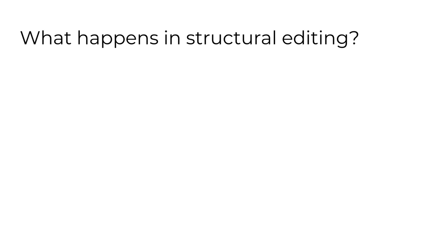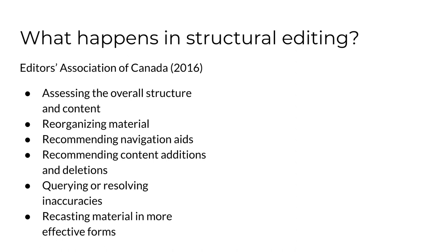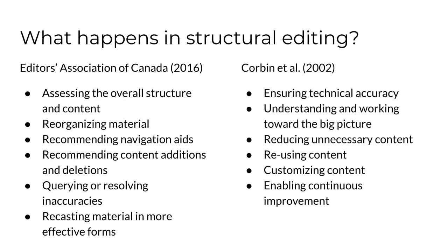Let's consider a few descriptions of quality assurance actions that involve structural editing. The Editors' Association of Canada lists items central to structural editing such as assessing overall structure, reorganizing material, and recommending content additions or deletions. Corbin and the other authors define structural editing in terms of technical accuracy, working toward the big picture, and reducing unnecessary content. Although the lists are not identical, there is significant overlap.